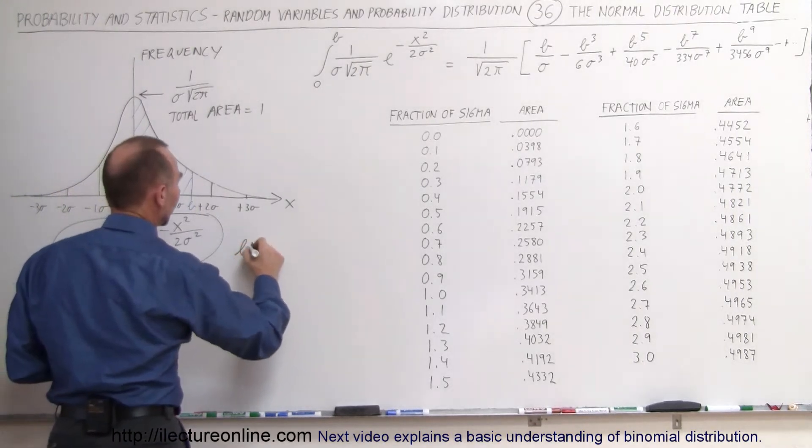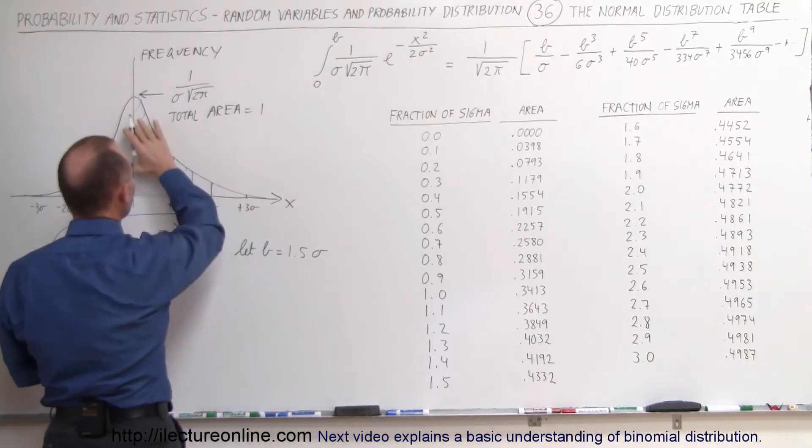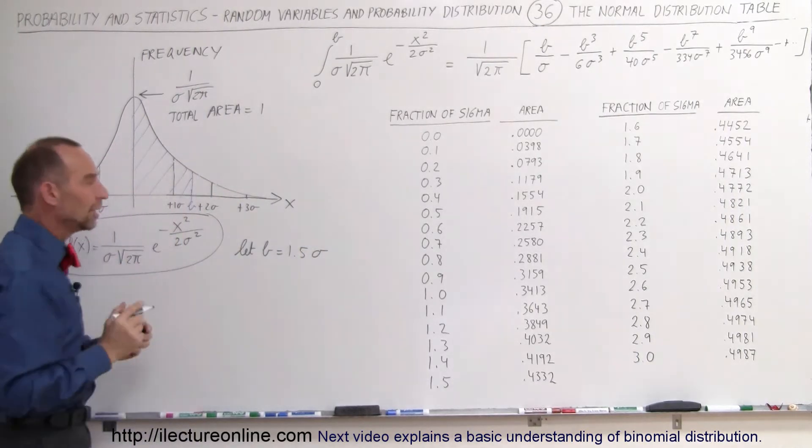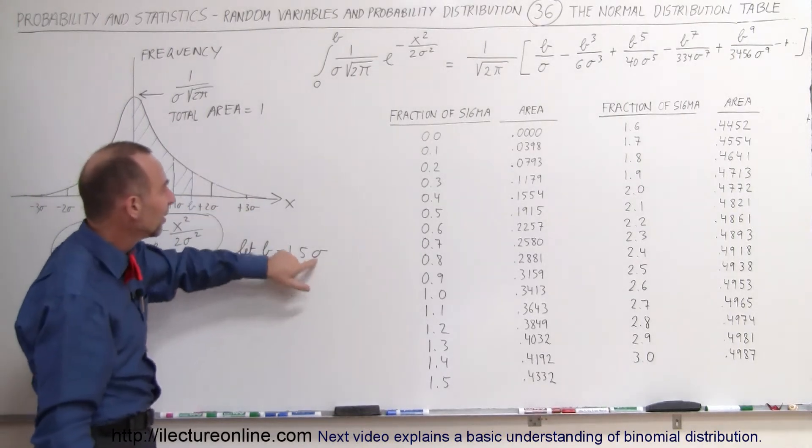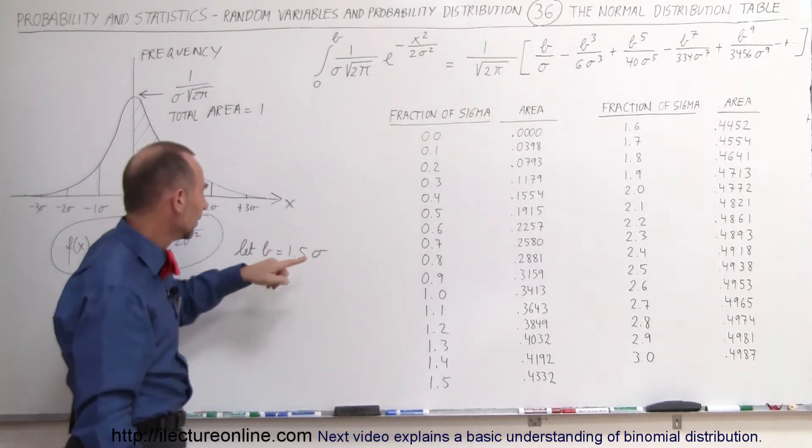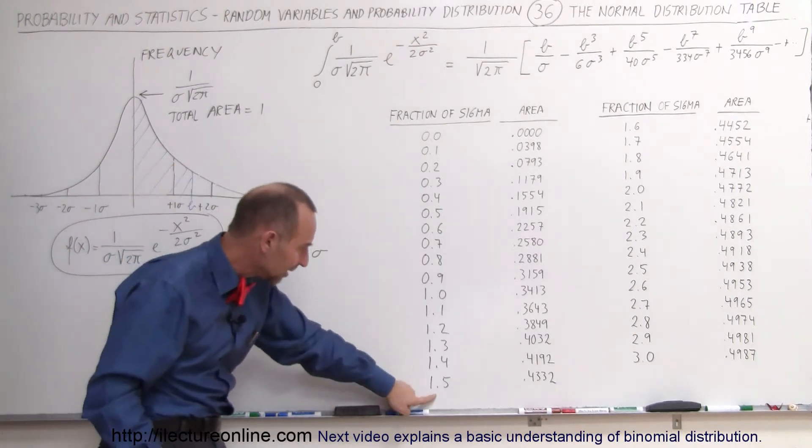If b was equal to 1.5 sigma, I'll show you how to use the table. So let b equal to 1.5 sigma and we want to know what the area is, the blue area right here underneath the curve. What we do is we come up here to the table and we find the equivalent fraction of sigma that's equal to b. In this case it's 1.5 sigma and we find that it's right here.